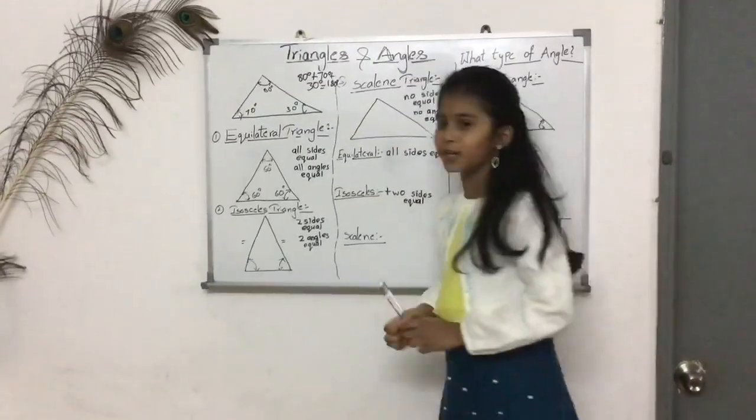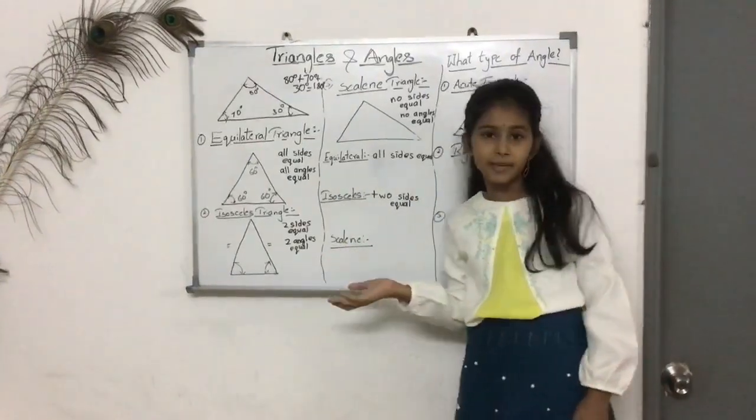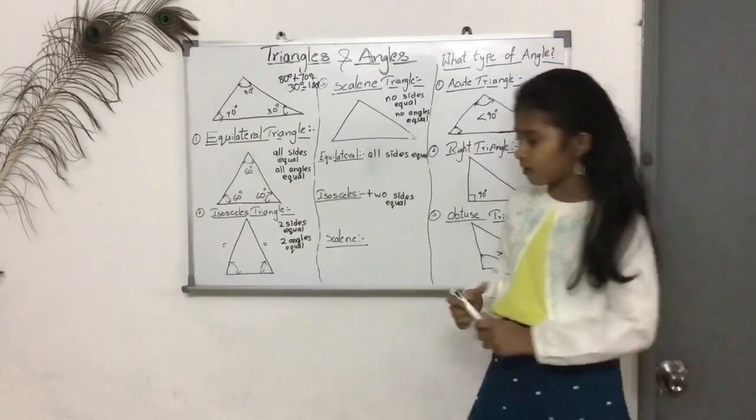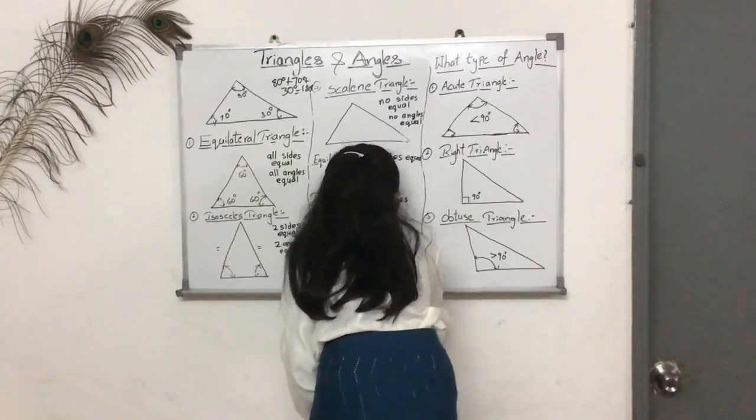And finally, we have our scalene triangle. Scalene triangle means uneven or odd. So, no sides are equal as well as angles.